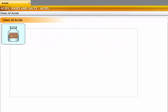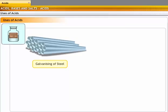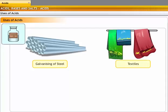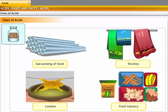Hydrochloric acid is used before galvanizing to remove oxide film from steel and also as a descaling agent for boilers. It is also used in the textile, leather, and food industry.